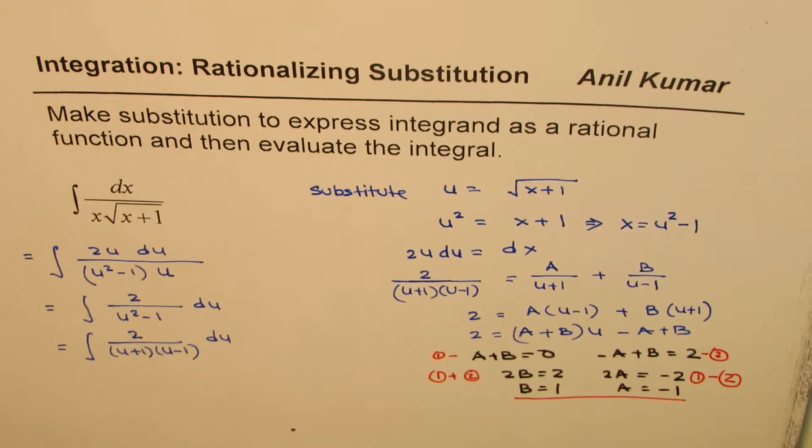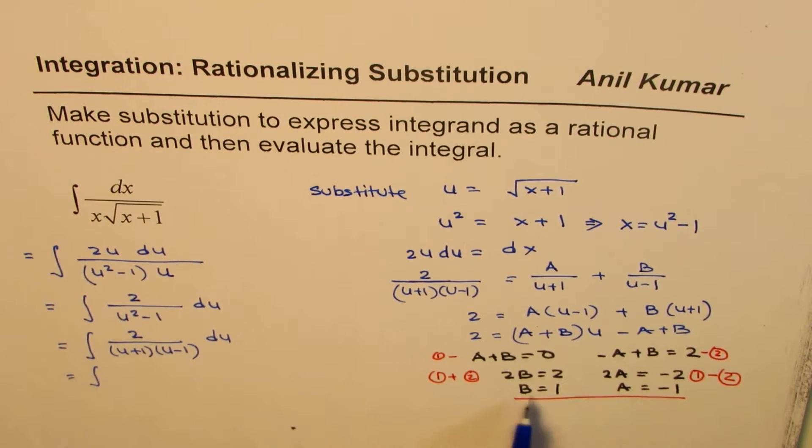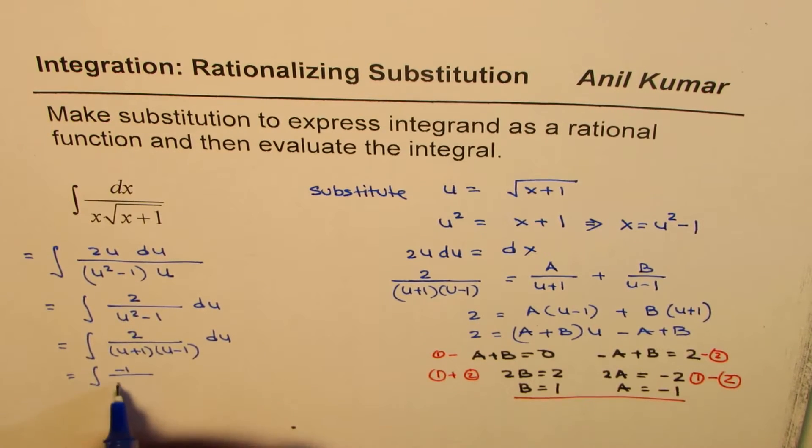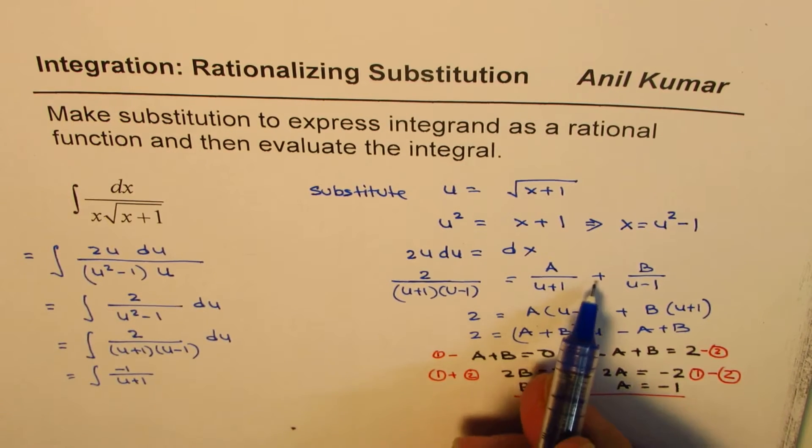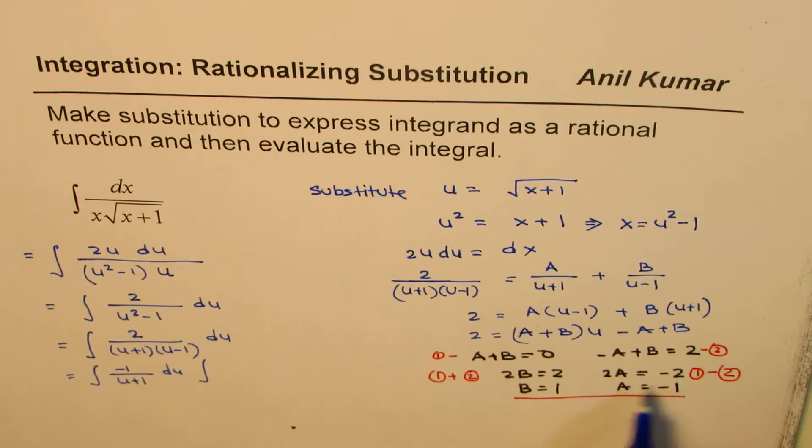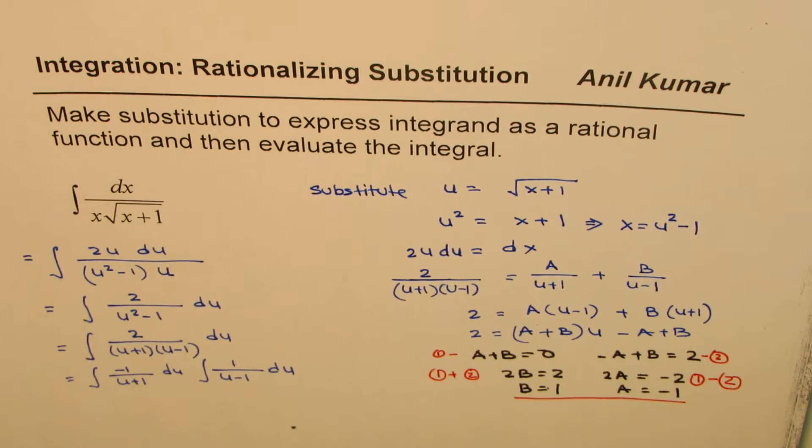So therefore I could write this integral as instead of 2 over this I could write this as minus 1 over u plus 1 and then we have du integrate 1 over u minus 1 du. Perfect. So that is what we get.